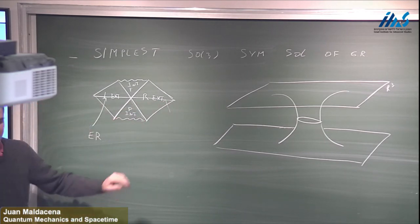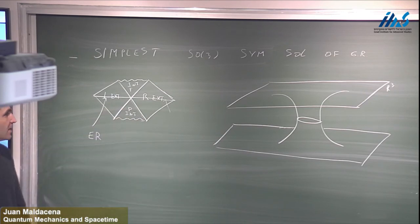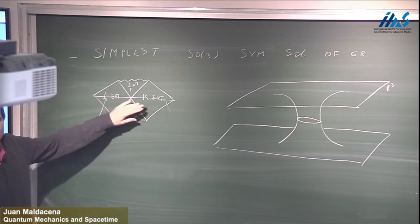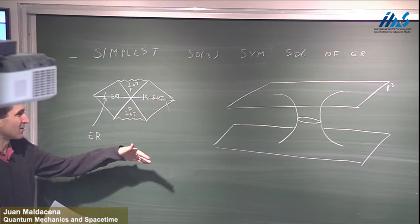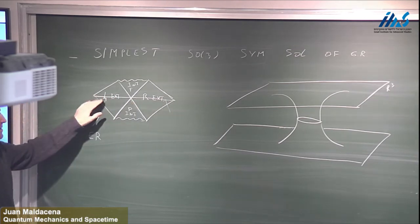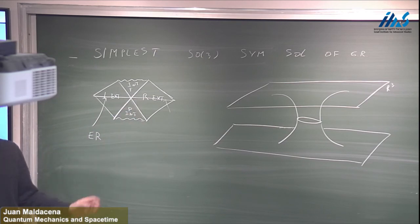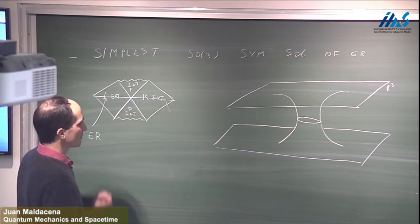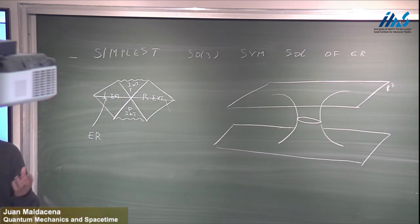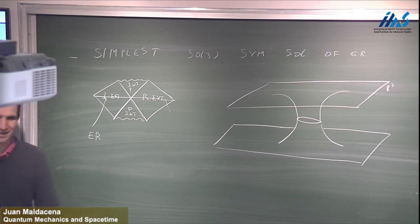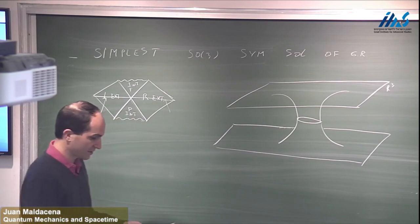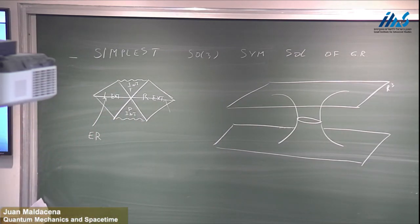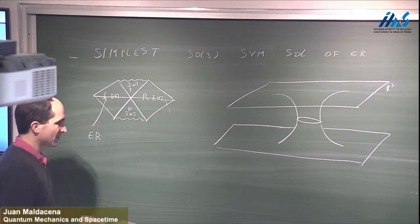Einstein and Rosen in 1935 noticed the geometry had this peculiar spatial slice. They didn't fully realize the solution was non-singular — they found a coordinate system where G00 was singular at this point and apologized for it. Their motivation was mainly trying to model elementary particles with geometrically non-singular solutions of GR, in the spirit of understanding whether non-singular solutions could model elementary particles.